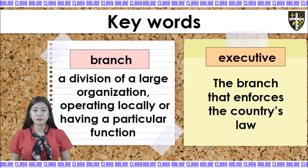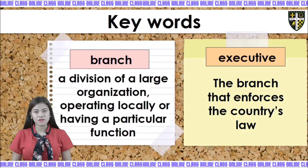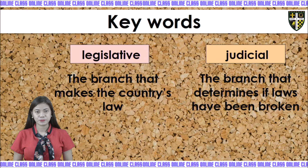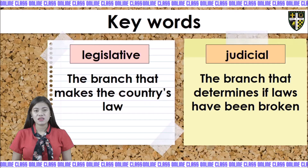Next we have executive. Executive — it is the branch that enforces the country's law. Legislative means it is the branch that makes the country's law. While judicial, it is the branch that determines if laws have been broken.